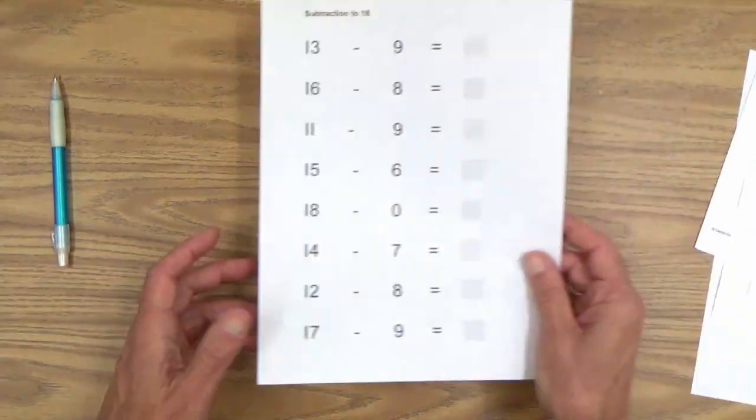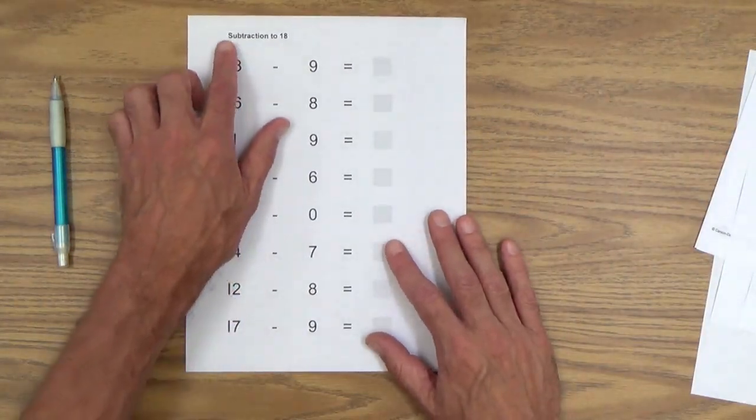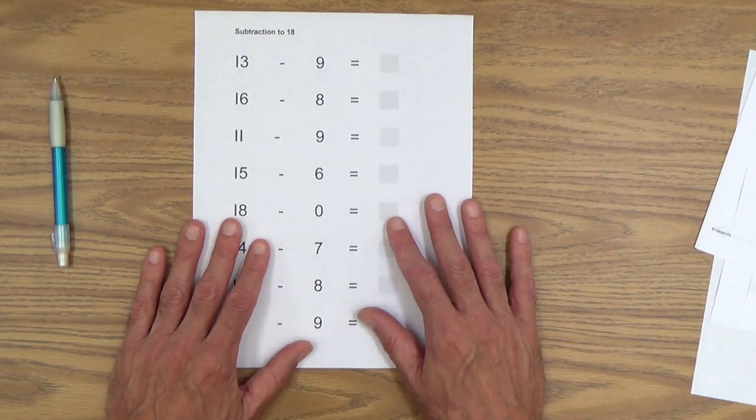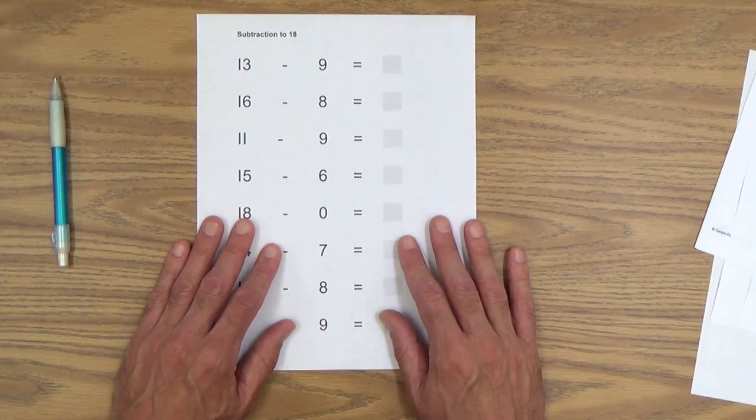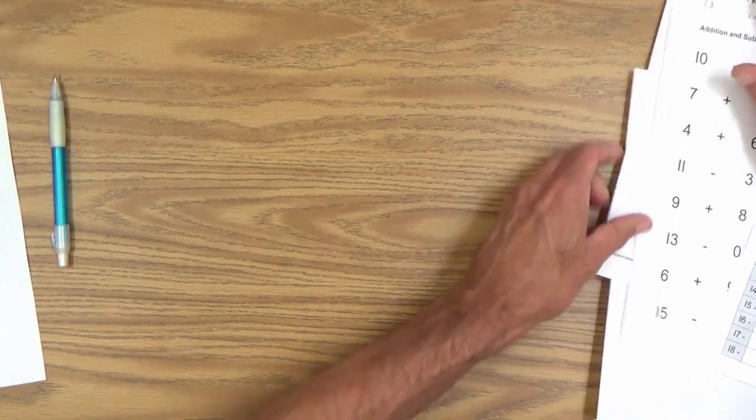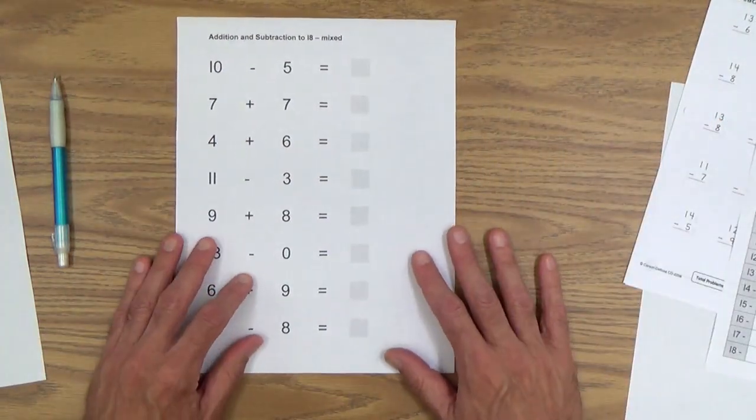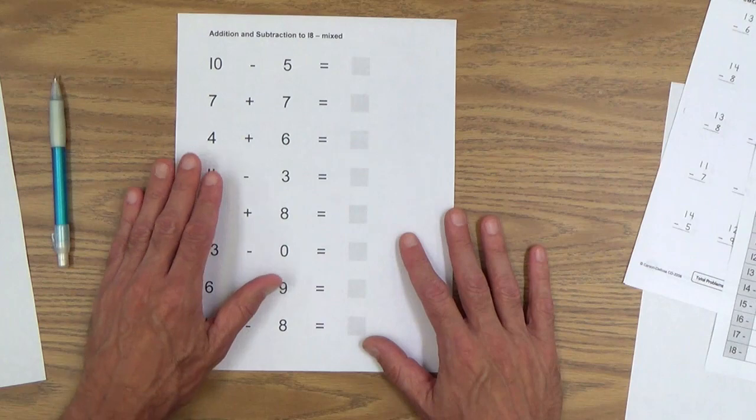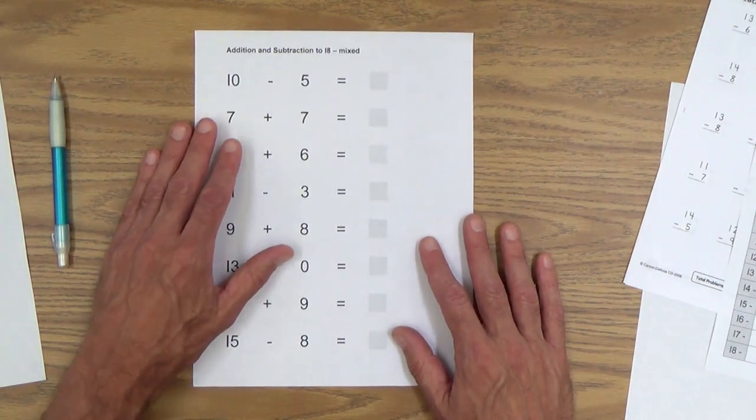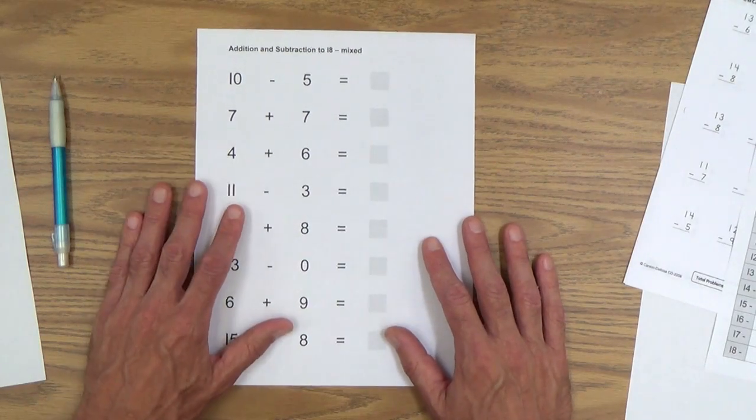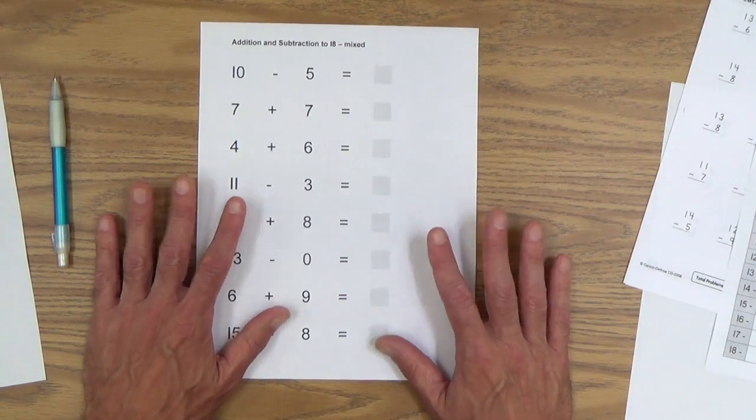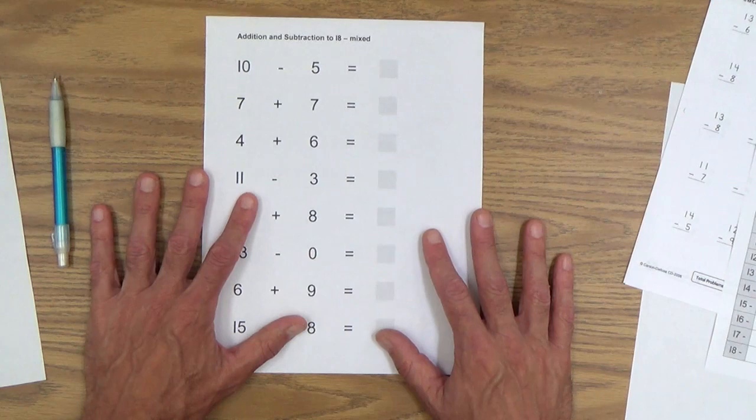That's subtraction to 15. Here's a similar practice sheet, subtraction to 18. You can work those problems out either with tally marks or finger counting. And finally, we have this one, addition and subtraction to 18. Like I said earlier, it really increases the challenge because now your child will have to use two different strategies interchangeably. He or she will definitely need, more than likely will need some support with these. Maybe not. I hope not.